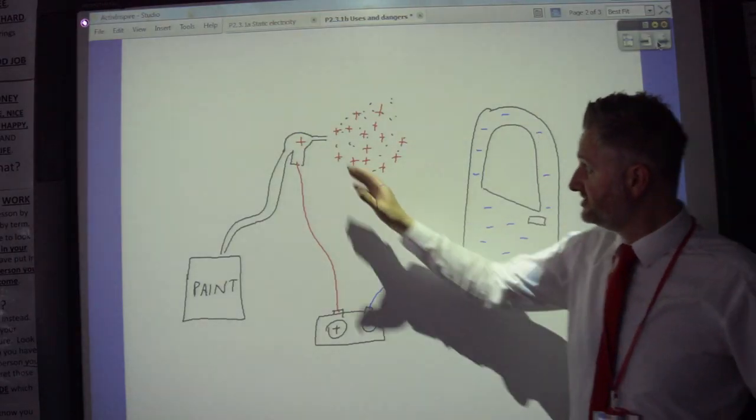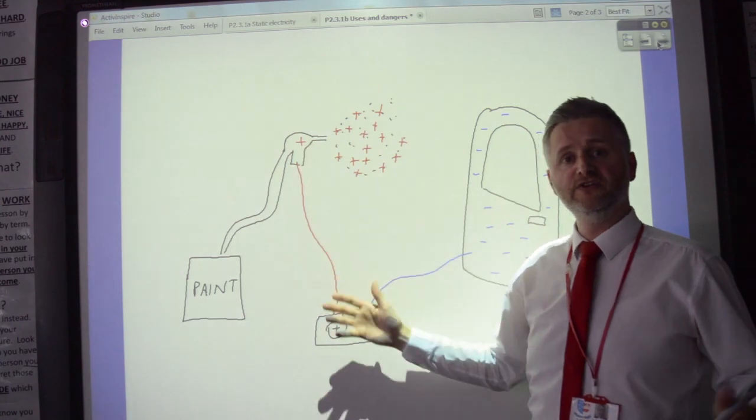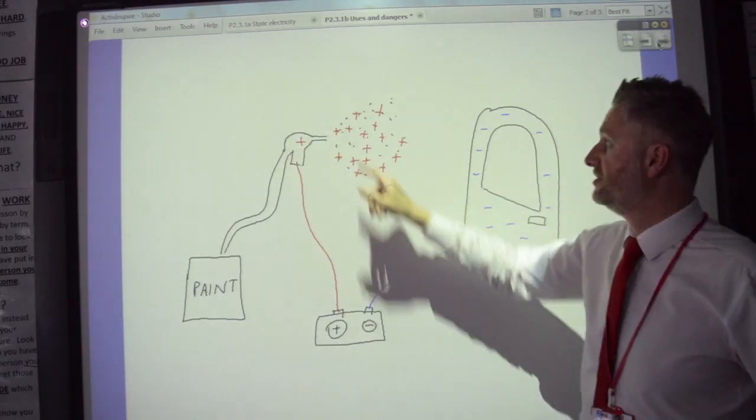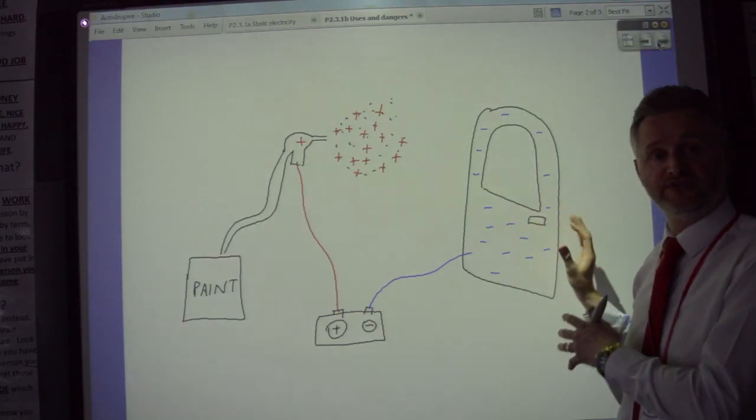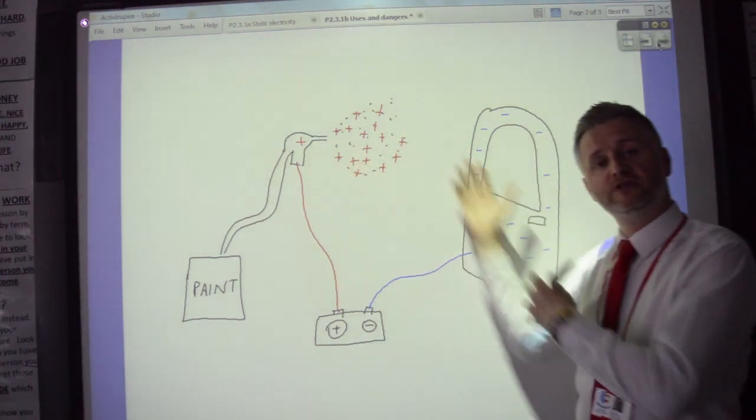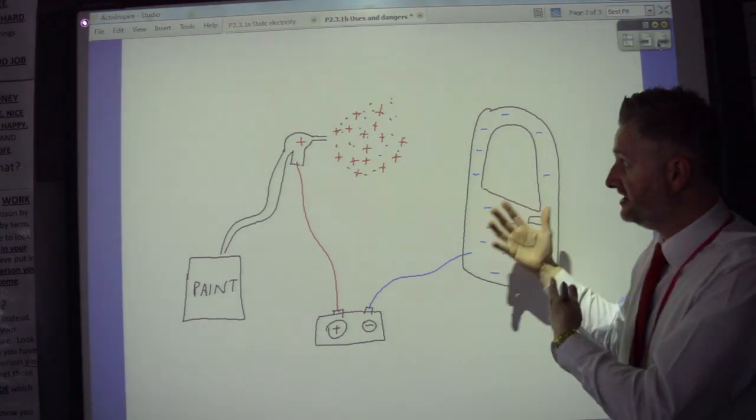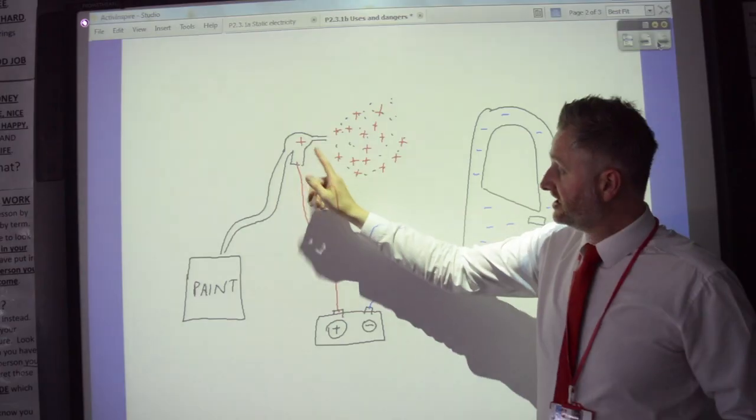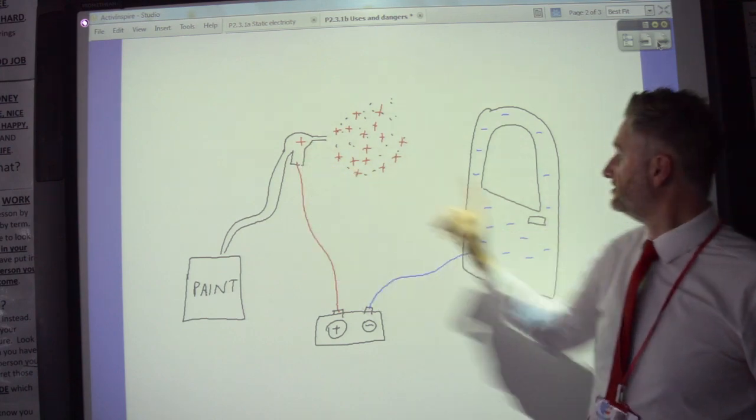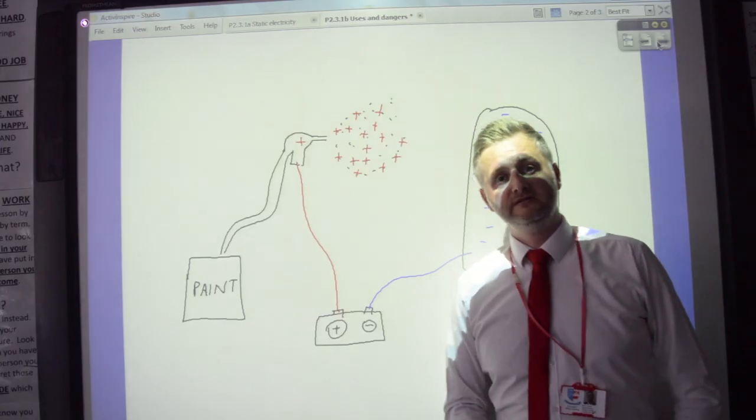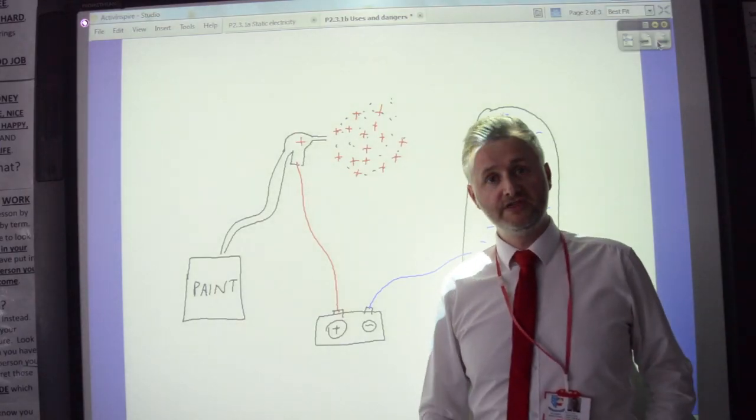With crop spraying, what would happen is you charge the droplets, either positive or negative. Just say you charge the droplets positive. The crops that you're spraying would not have a charge. But when the positive charge comes close to it, that would induce a negative charge in the crops and it would be attracted that way. You can do it the other way around. You can charge this negative and you can charge that positive. Not a problem. And that's how to take care of business with that. Thank you very much.